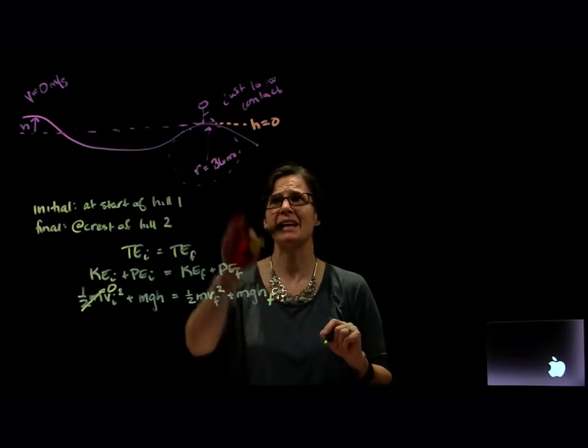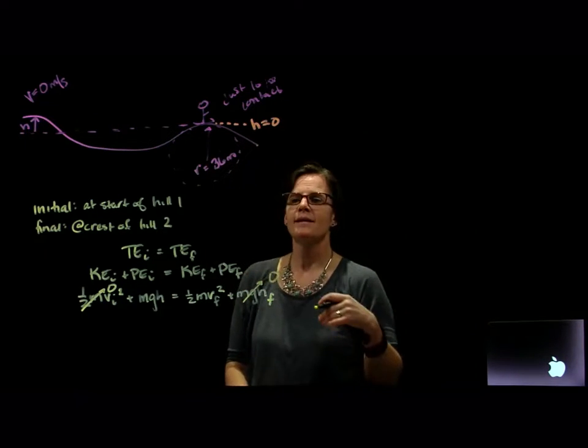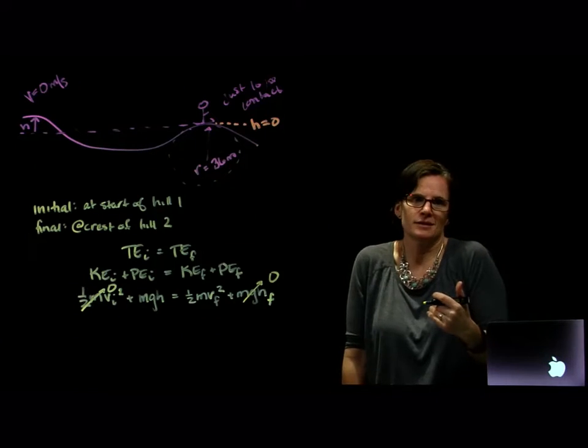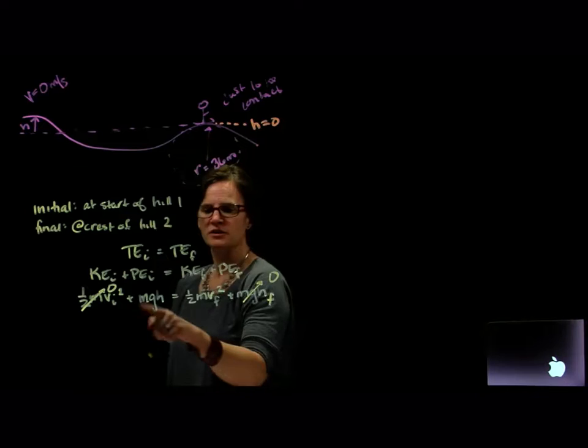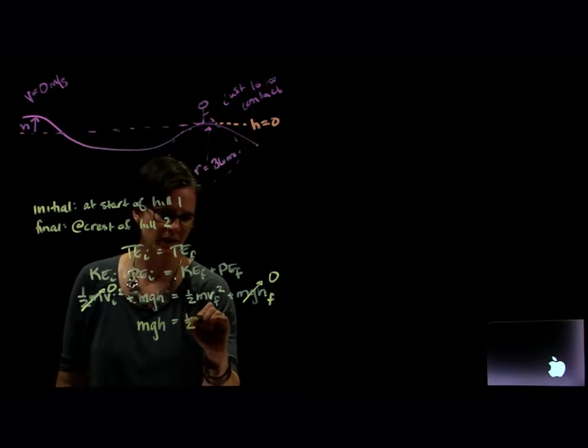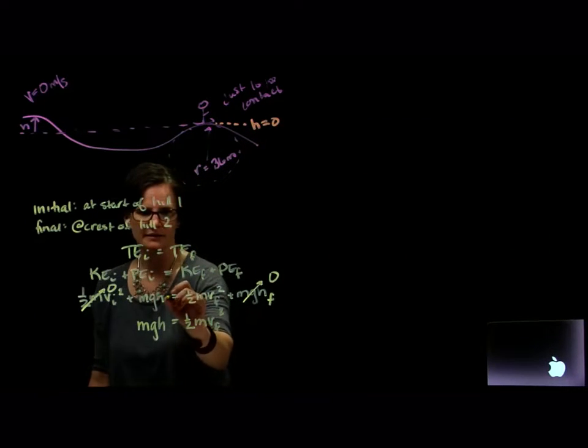Similarly, at the end where we care about, the height is equal to zero, so there is no potential energy because he's at the zero level. So that's our reference point of potential energy. So this reduces mathematically to mgh equals one half mv final squared, and this is an initial height.